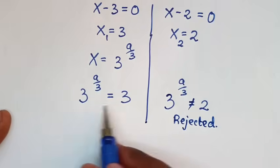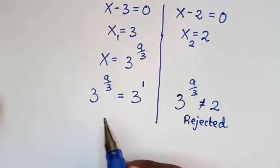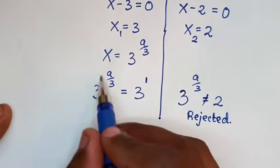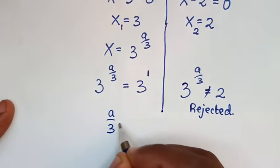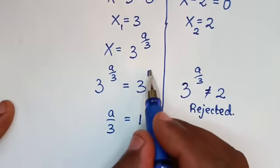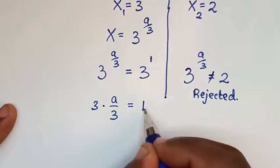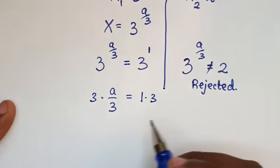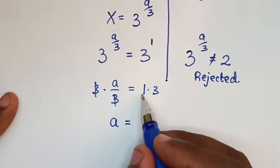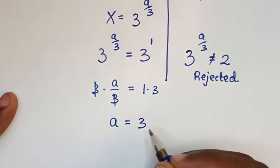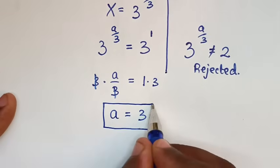So from the valid solution: 3 power of a over 3 equals 3, which is the same as 3 power of 1. We have the same base of 3, so we compare the powers: a over 3 is equal to 1. We multiply by 3 on both sides — this and this cancel — then a is equal to 1 times 3, it is 3. So this is the final answer for the value of a.